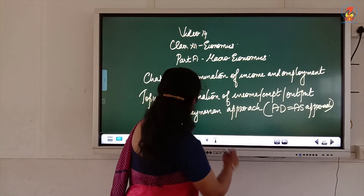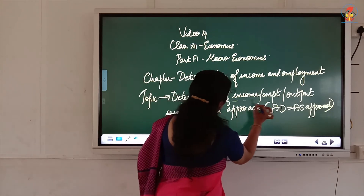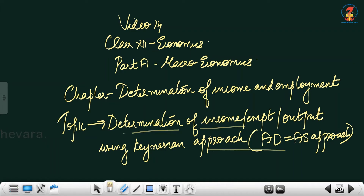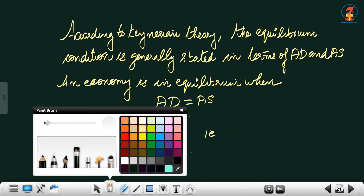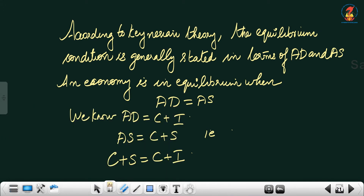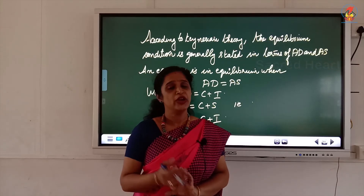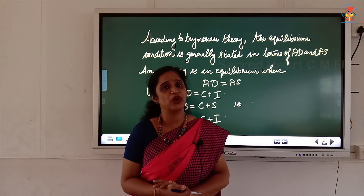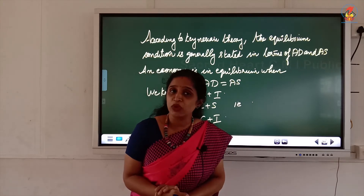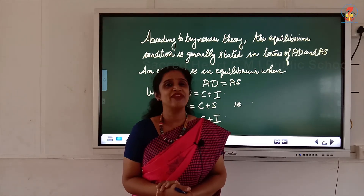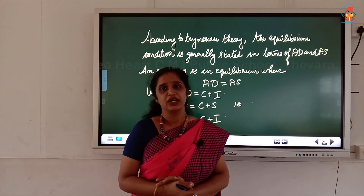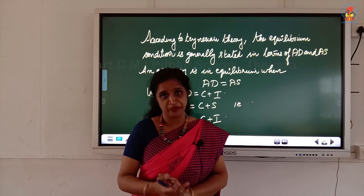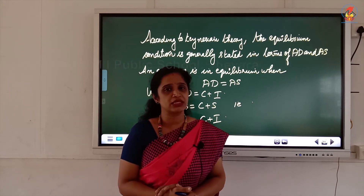Now we will move on to the determination of equilibrium level of employment using the AD-AS approach. For both approaches — AD-AS and saving-investment — Keynes has used the same assumptions. These approaches work under the same set of assumptions.